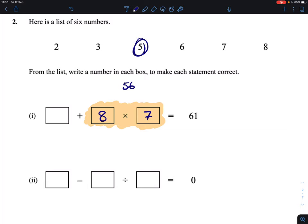And all that's left then is to add it to the number 5. So 5 plus 8 times 7, or 7 times 8, will give you 61.